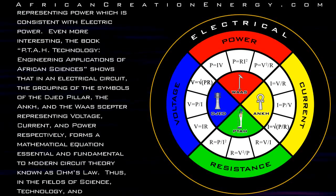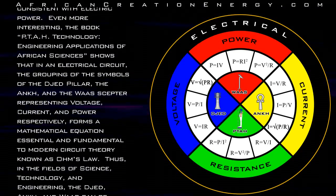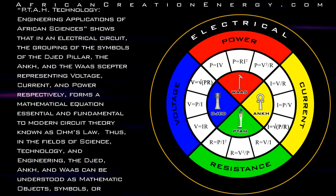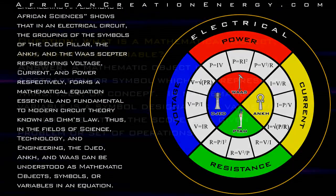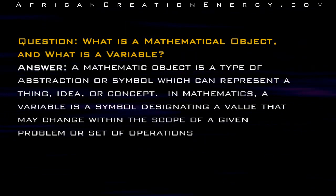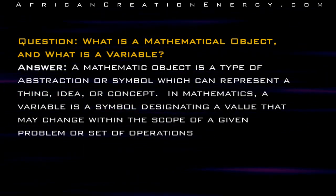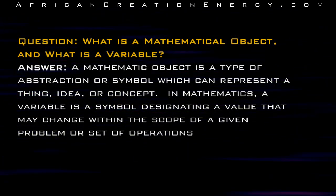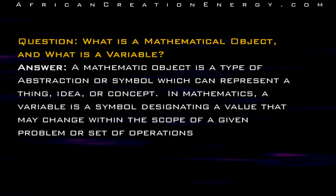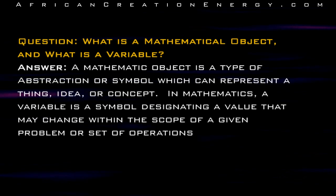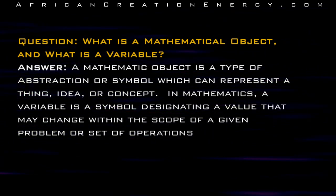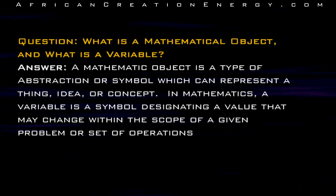Thus, in the fields of science, technology, and engineering, the Jed, Ankh, and Was can be understood as mathematical objects, symbols, or variables in an equation. A mathematical object is a type of abstraction or symbol which can represent a thing, idea, or concept. In mathematics, a variable is a symbol designating a value that may change within the scope of a given problem or set of operations.